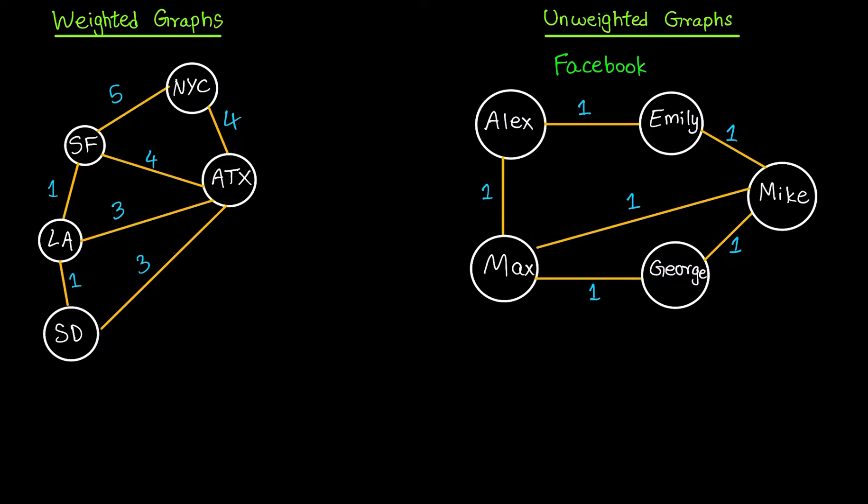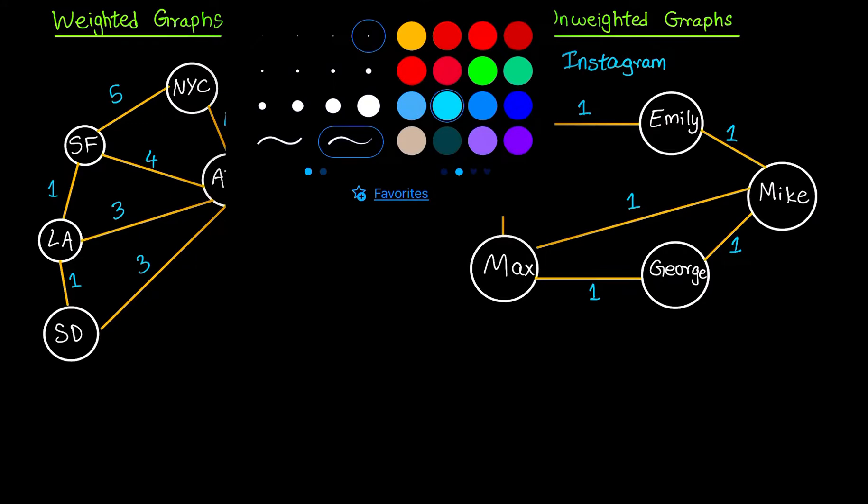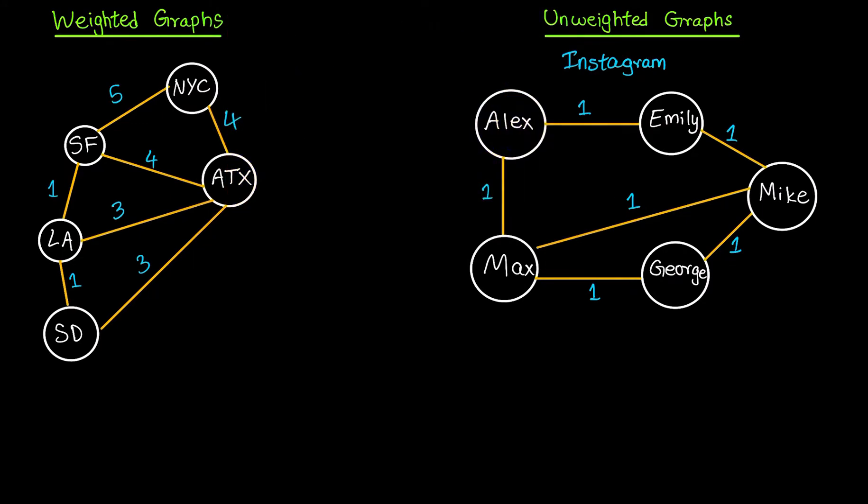If we want to look at an example where we will have a directed graph instead of Facebook, we could look at Instagram. In Instagram, if Alex is following Emily, it need not mean that Emily is following Alex. Alex can follow Emily but Emily need not follow Alex, so we need to make it a directed graph.